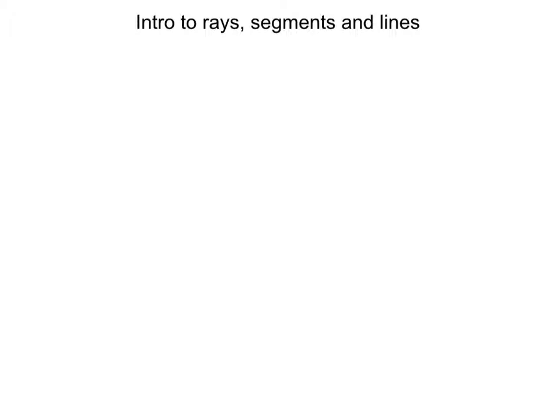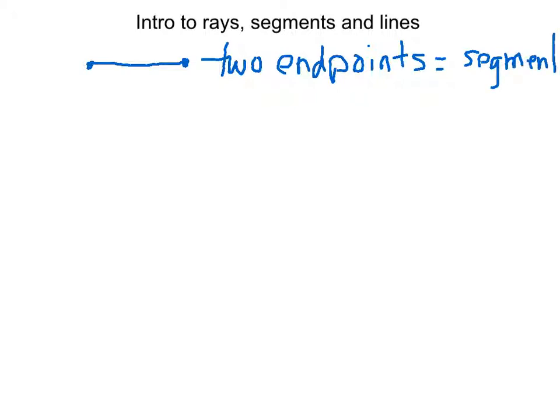So a segment is something like this. It just has two endpoints. And the notation for it, that's going to be a segment, is very common sense, which is nice. If we label this endpoint A and that endpoint B, we would call this segment AB. We wouldn't have to write it out like that, though. We just write the letters AB next to each other, and we put a line over them. So that's how we would express segment AB.